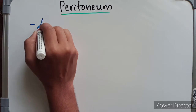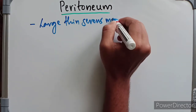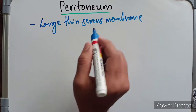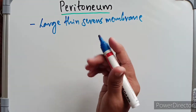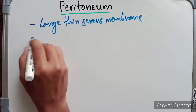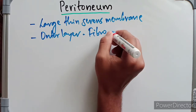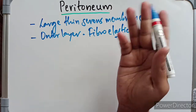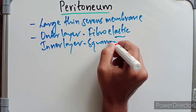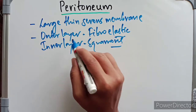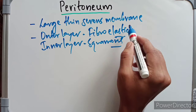The peritoneum is a large, thin serous membrane — serous because it produces serous fluid. It lines the interior of the abdominopelvic cavity, including the abdomen and pelvis. It is made up of two layers: an outer layer of fibroelastic tissue and an inner layer of squamous epithelium. It forms the largest serous sack of the body.